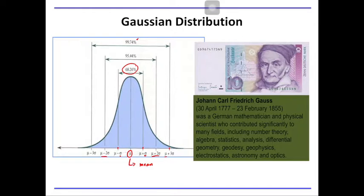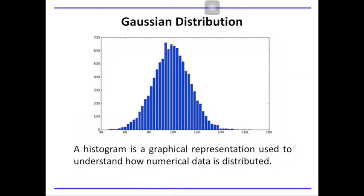This distribution was developed by Johann Carl Friedrich Gauss, a German mathematician and physical scientist who contributed significantly to many fields. The following histogram is a graphical representation used to understand how numerical data is distributed. The mean or central value is around here, meaning almost all the data are gravitated towards the mean. That is the essence of the Gaussian or normal distribution — there is a very high probability of finding similar measurements near the mean value, and as you go outwards, you have low probability of finding those measurements, which are the extreme values.